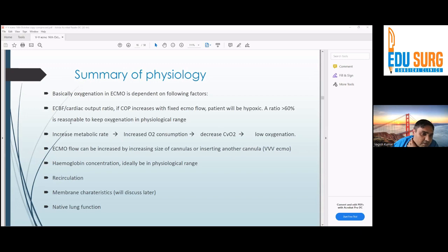ECMO flow: if you want to increase that flow more, suppose your cardiac output is high and your ECMO blood flow is not meeting this criteria and the patient is desaturating, you can insert another cannula. It may be bifemoral drainage cannula and you can put it back through the right IJ. That will be your return cannula, so it will be a VVV ECMO configuration. As you know, content of arterial oxygen is also dependent on hemoglobin. You can increase hemoglobin to increase the oxygen content. You should really look for recirculation. If the patient's recirculating, you may need to reposition your cannulas. And of course, membrane characteristics, which we'll discuss later.